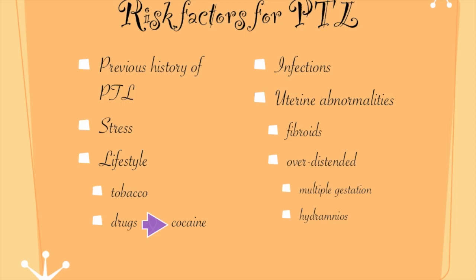A woman who has abnormalities of the uterus, such as fibroids — which are benign muscle tumors — is at risk for developing PTL. If the uterus is overdistended due to either overproduction of amniotic fluid, termed hydramnios or polyhydramnios, or from a multi-fetal gestation pregnancy like twins, triplets, quadruplets, or quintuplets, there is an increased risk for developing preterm labor.